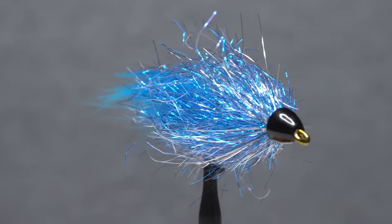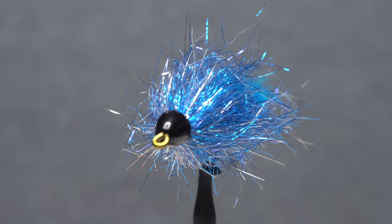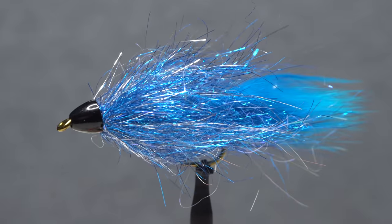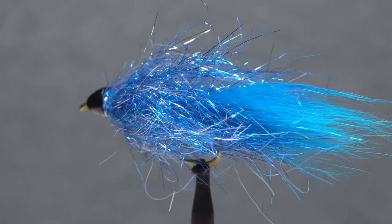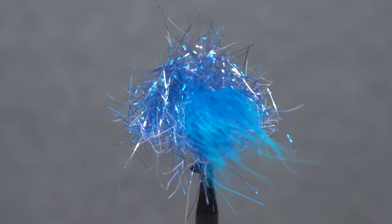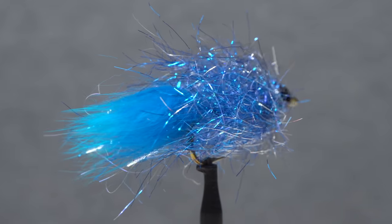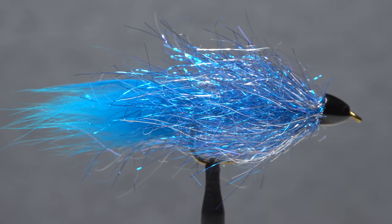I call this fly the frozen fox because it incorporates just two materials, ice dub and arctic fox fur. By mixing and matching the colors of the two materials, it can be produced in a huge range of color combinations.